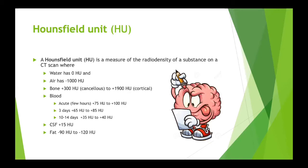CT scanners measure radio densities with Hounsfield units - a measure of radio density compared to water. Pure water is zero Hounsfield units. The scale runs from minus 1000 to about plus 3000-4000 depending on the scanner. Air in sinuses is roughly minus 1000. Bone can be anywhere between plus 300 to plus 1900, depending on the cancellous versus cortical component.